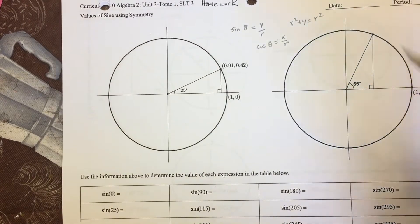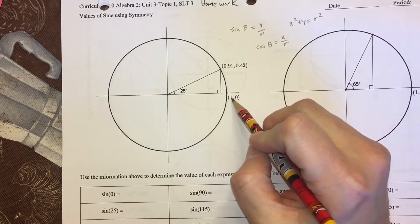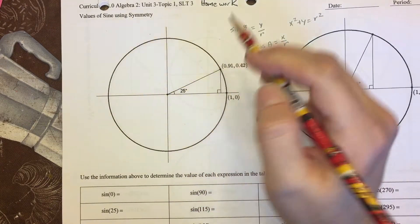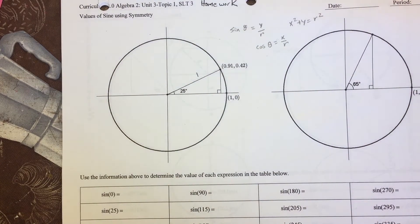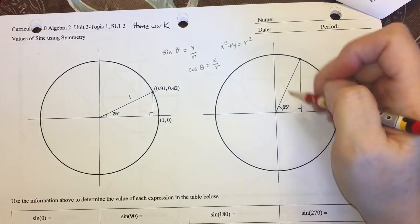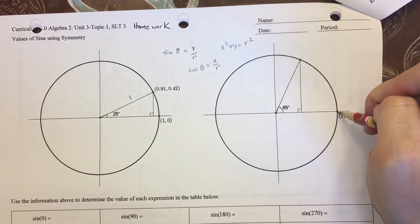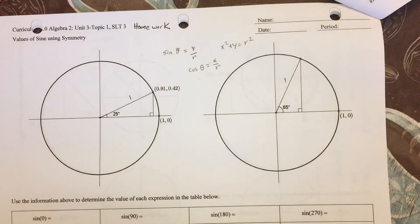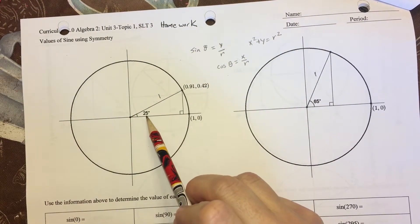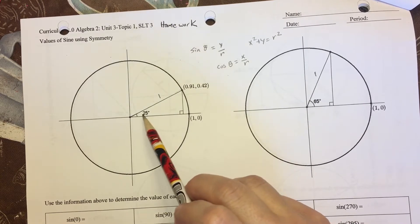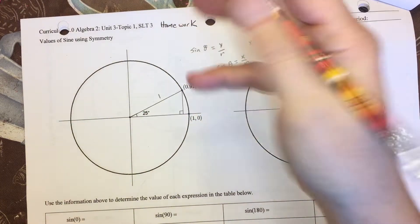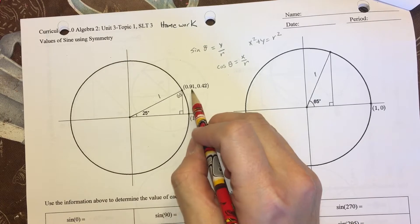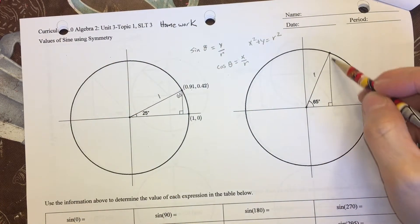Now the first thing I want to notice in this homework assignment is that I've got a point here at (1, 0), and (1, 0) tells me that the radius of my circle, and thus this hypotenuse, is 1. Now that same thing is true for this angle here that says 65 degrees—it also has a radius of 1, so I'm going to mark its hypotenuse. Now the one thing I notice is this is 25 degrees, this is 90 degrees, and in order for all these angles to add up to 180, this has to be 65 degrees.